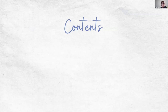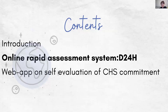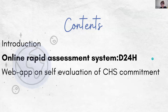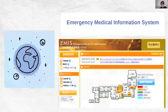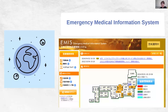The two tools I will introduce today are the Rapid Assessment System for Shelters and the CHS Commitments Self-Check Tool. The first one is the Rapid Assessment System for Shelters called D24H. The motivation for creating this system came from knowledge of EMIS, the emergency medical system, as a national disaster medical supporter called DMAT.